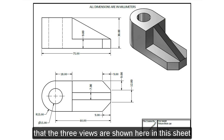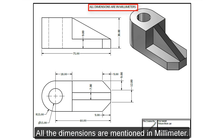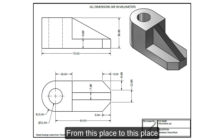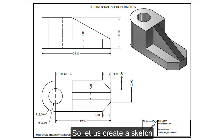Here we can see that three views are shown in this sheet: front view, top view, and isometric view. All the dimensions are mentioned in millimeters. With the top view we can get the outline dimension of the model — we can think of a rectangular shape and from here a tangent arc shape. So let us create a sketch using the mentioned dimensions.